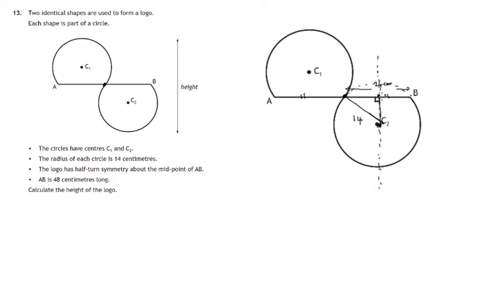This side of that triangle must be half of the 24. Therefore that's 12 centimetres. So we have a right angle triangle with one side 14 and another side 12. Therefore we could find this side. Let's call it x.